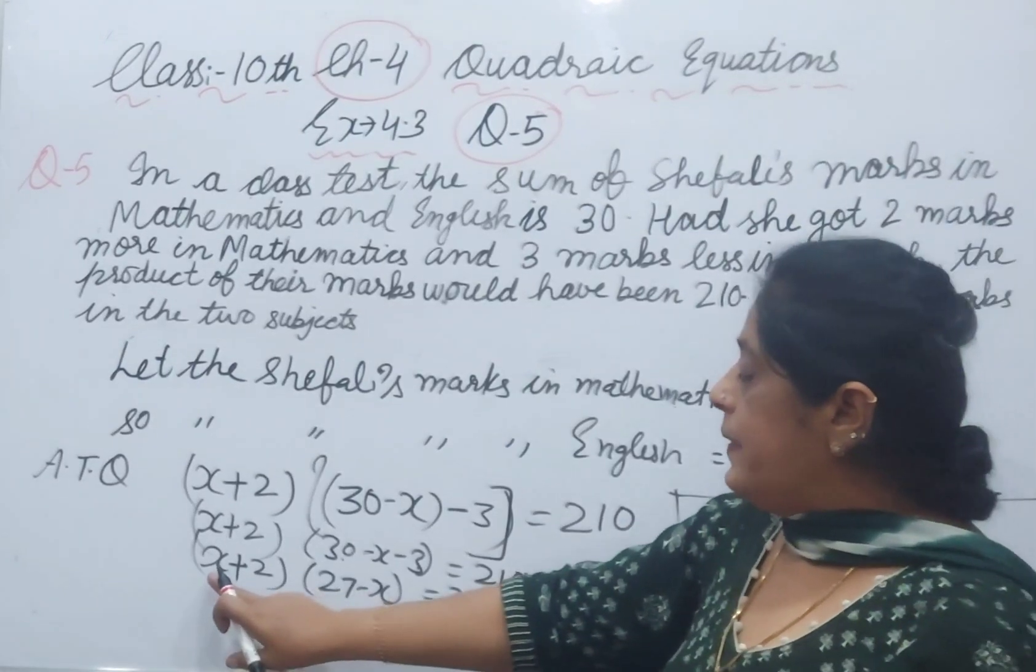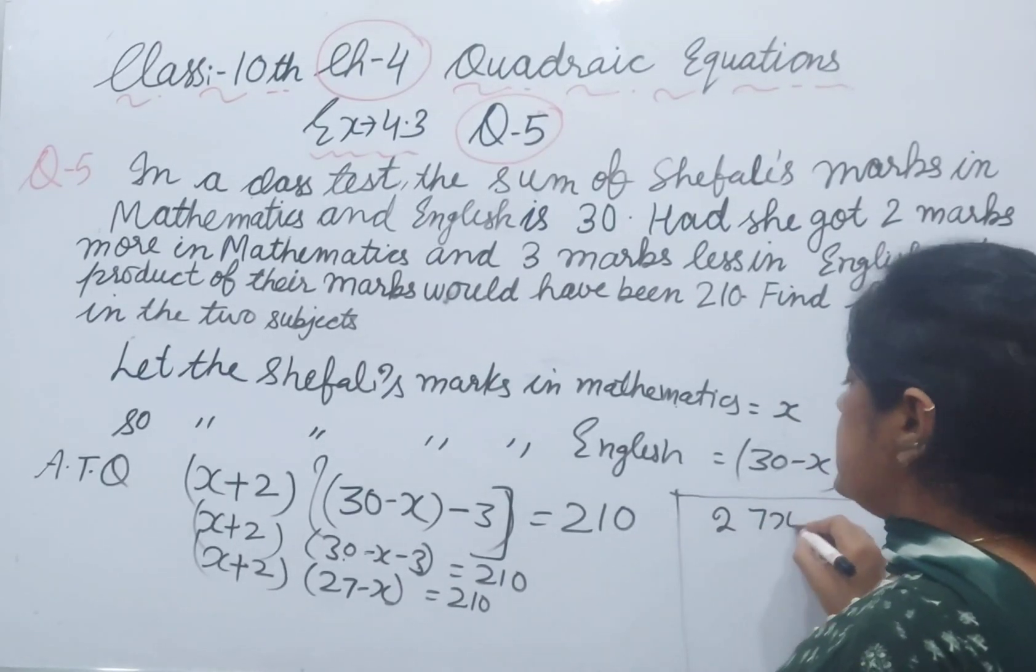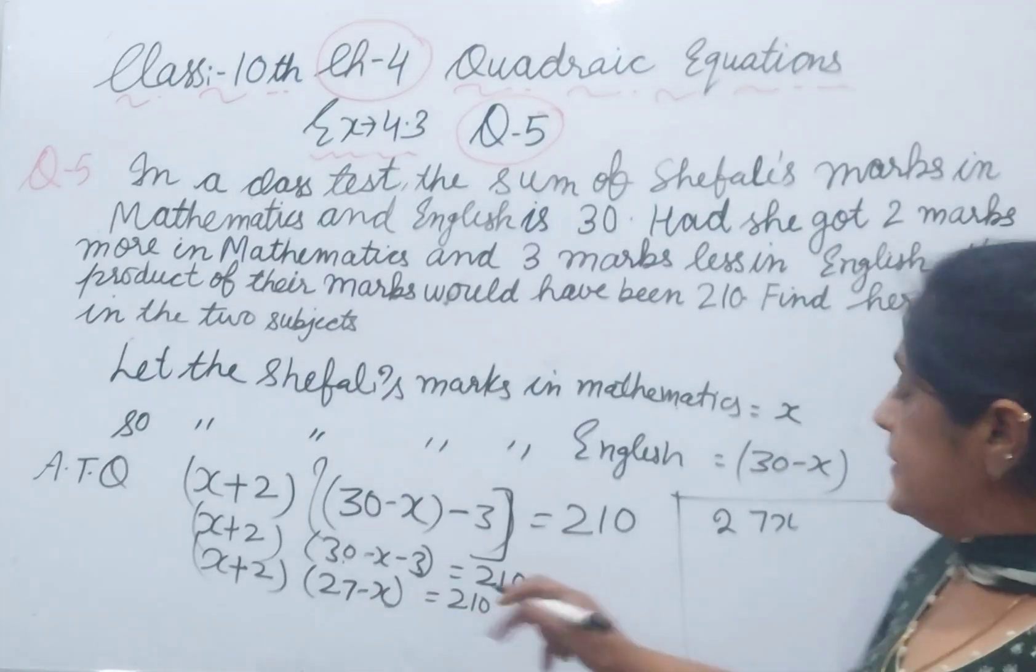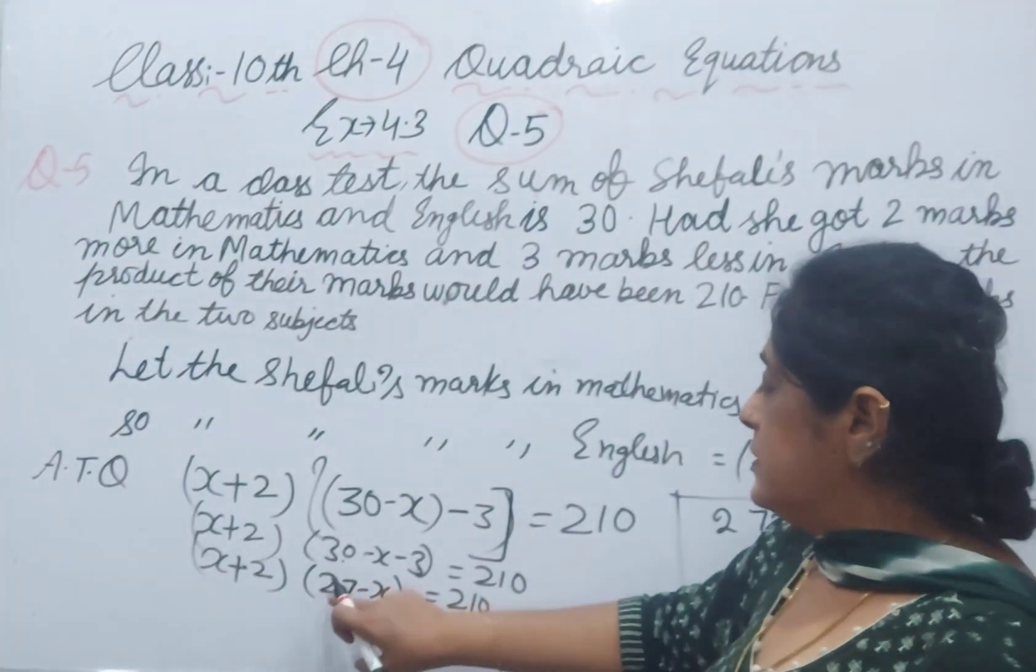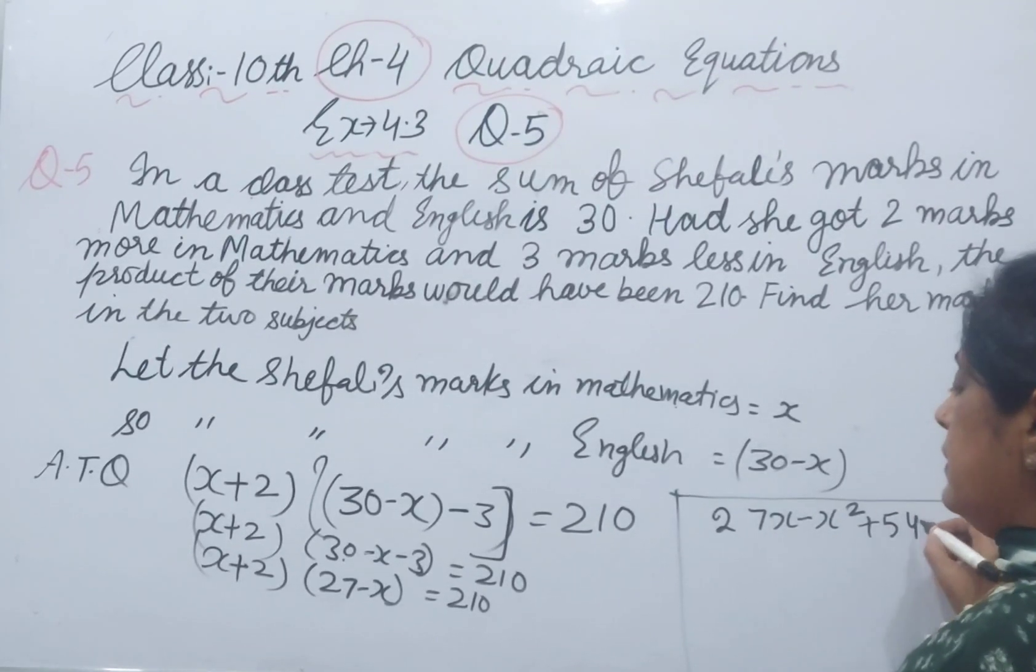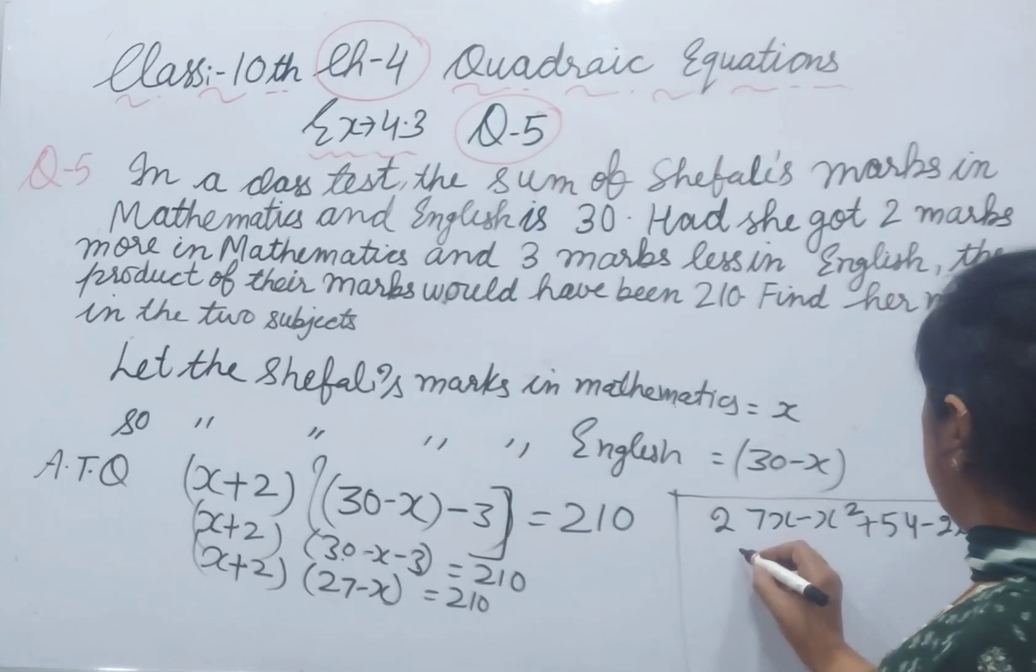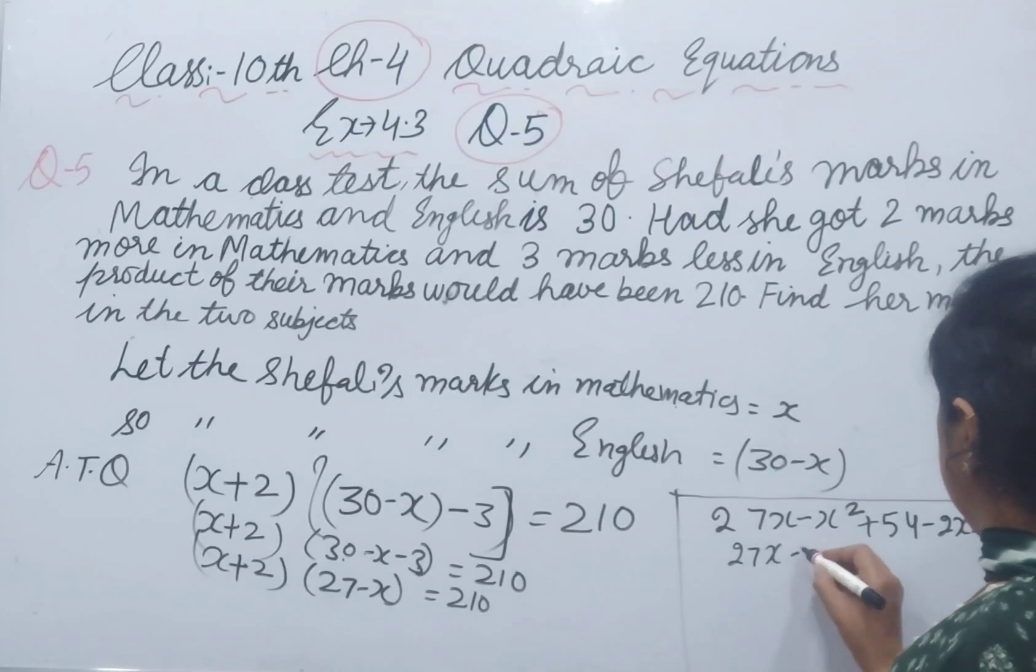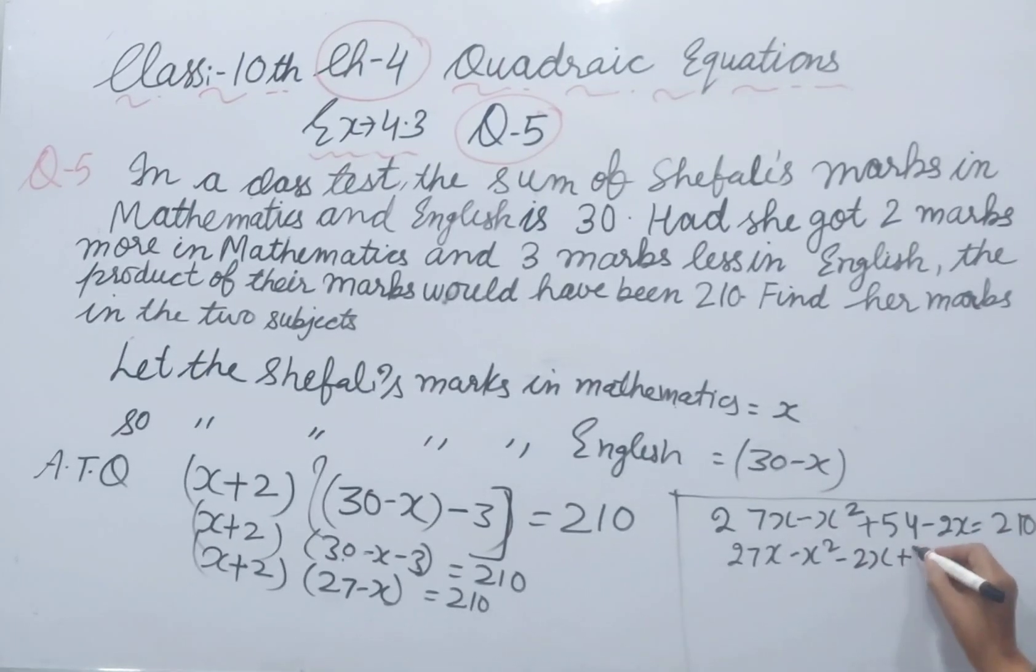Now we will multiply: x times 27 gives 27x, x times minus x gives minus x squared, 2 times 27 gives 54, 2 times minus x gives minus 2x, equals 210.